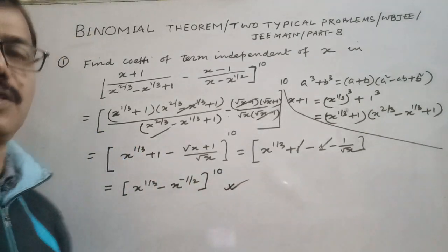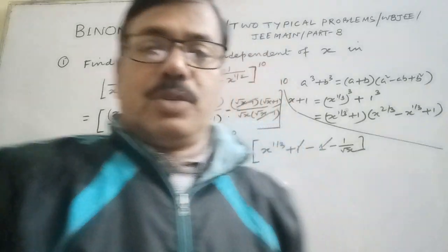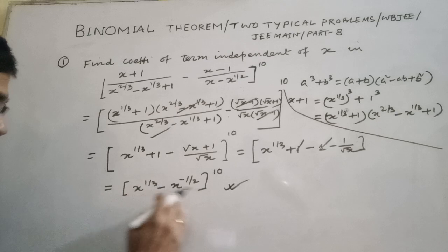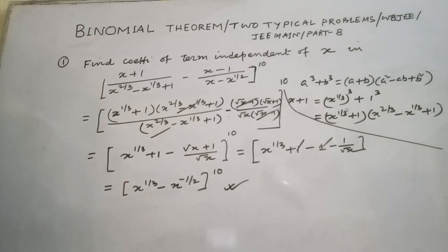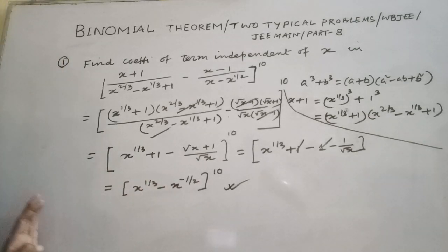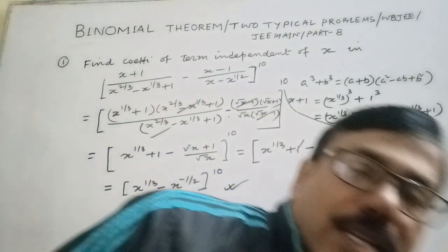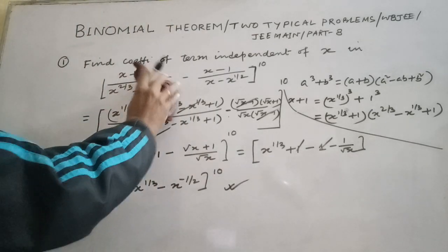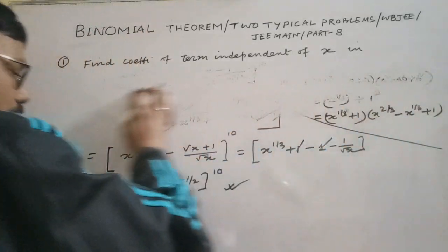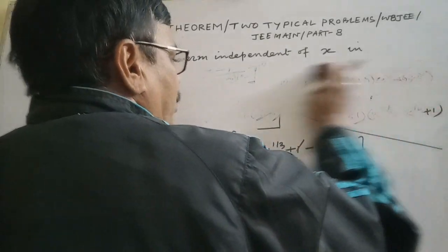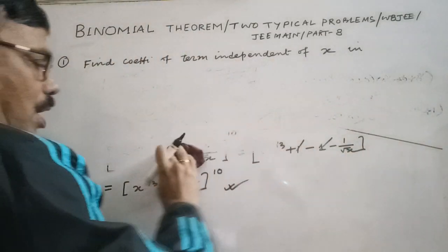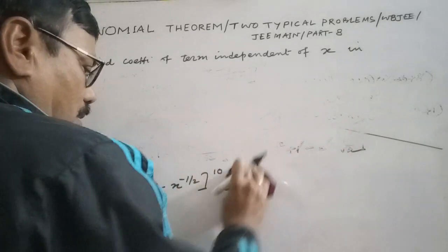Finally, we get (x^(1/3) - x^(-1/2))^10 as the simplified form. This is a single binomial term, so we can now easily find the independent term.